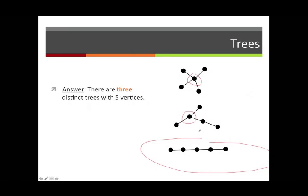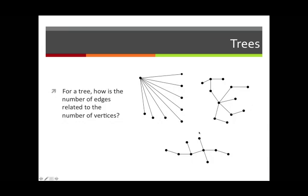Now, one more thing before we stop with this preliminary lecture on trees. And that's to ask, for a tree, how is the number of edges related to the number of vertices? Well, here are the three examples I showed you earlier. And let's look at them one at a time. Let's just count.